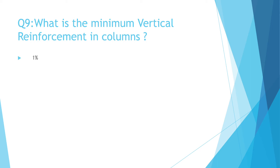Question 9: What is the minimum vertical reinforcement in columns? A. 1%, B. 2%, C. 3%, D. 4%. The correct answer is A: 1%.